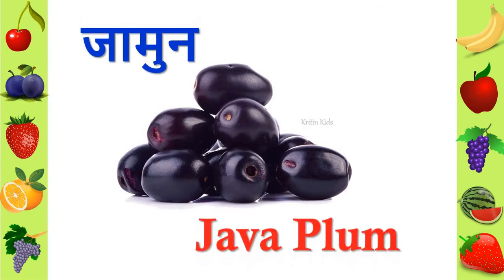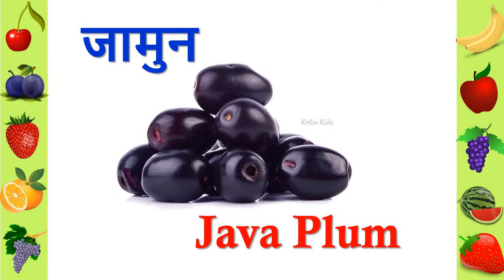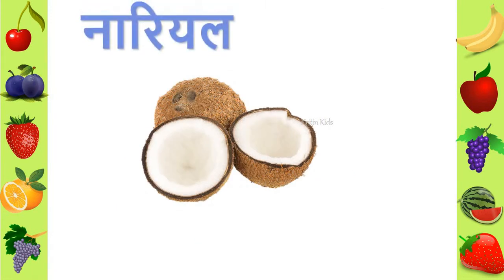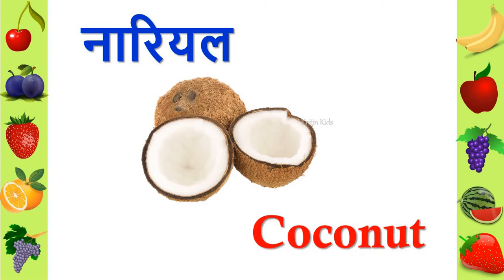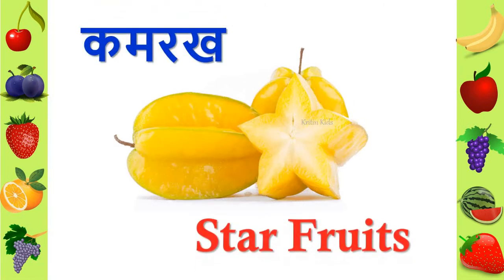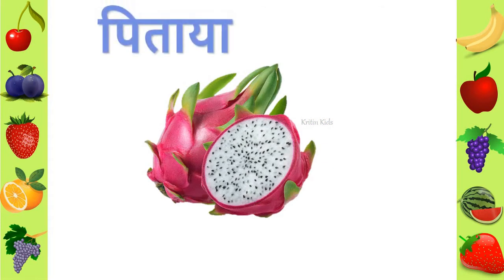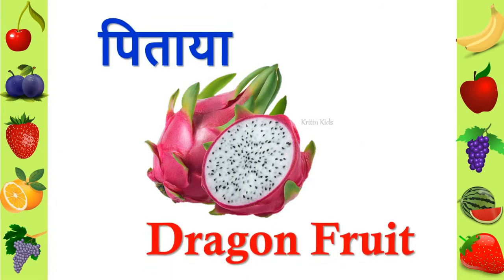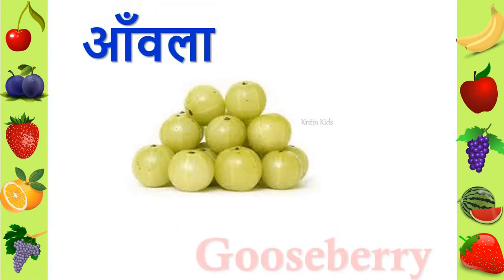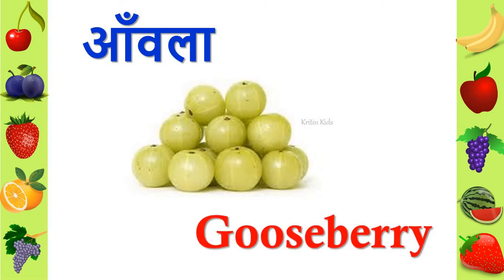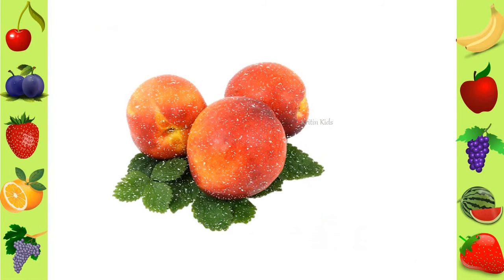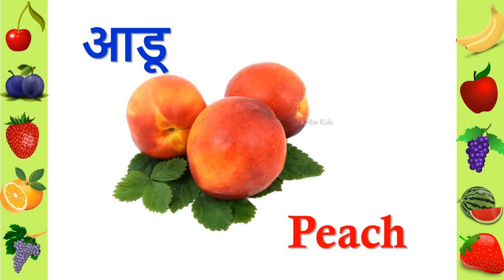We call it jamun in Hindi and in English we call it java plum. We call it nariyal and in English we call it coconut. We call it kamrakh and in English we call it star fruit. We call it in Hindi and in English we call it dragon fruit.